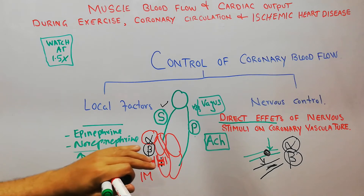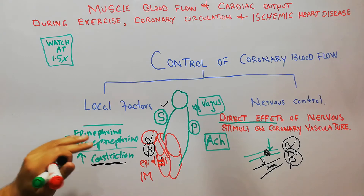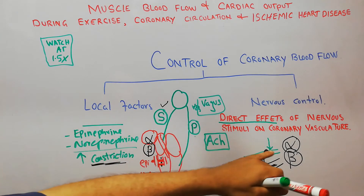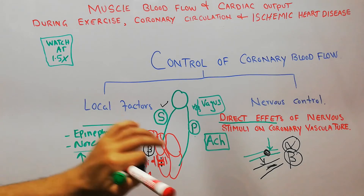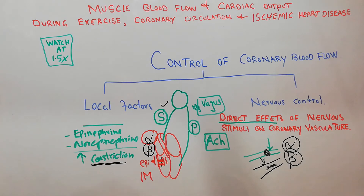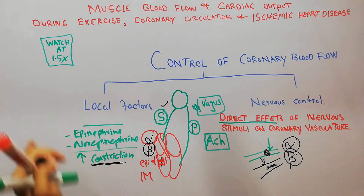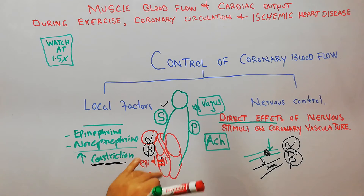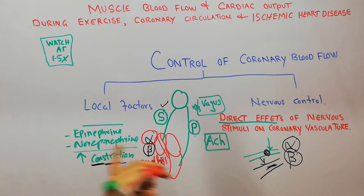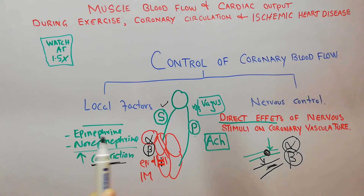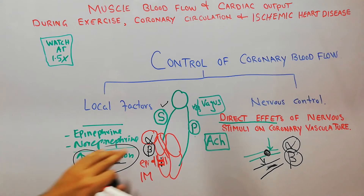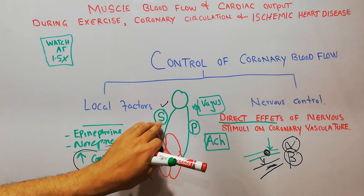Epinephrine and norepinephrine will most often lead to vasoconstriction, especially in the peripheral portion of the body. But this constriction or dilation also depends on the presence of alpha or beta receptors. Both receptor types are present in the heart — alpha are more present in the epicardial vessels, beta are more abundant in the intramuscular portions. So with sympathetic stimulation, both vasoconstriction and vasodilation of coronary vessels can occur, but most of the time constriction occurs.